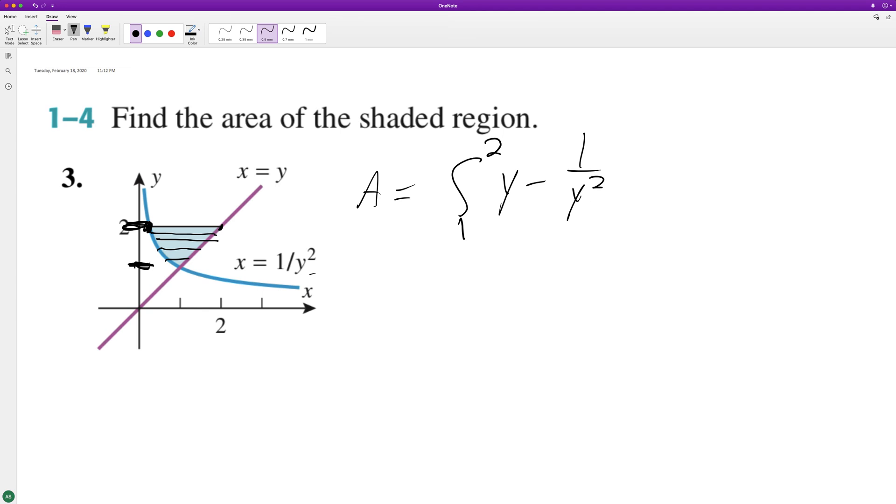And when we integrate this, it's going to be y squared over 2, and then it's going to be plus y raised to the negative 1, or 1 over y. And it becomes positive because we cancel out the negative.